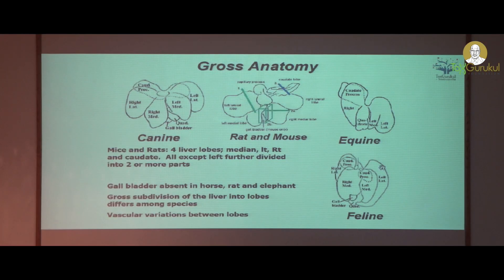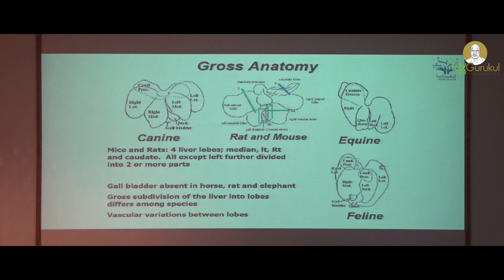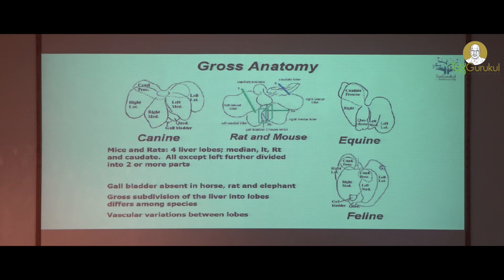Coming to the gross anatomy, this is the rat and mouse liver. We usually take the left lateral lobe and the right lobe. As you all know, the gallbladder is not present in rat, horse, and elephant, and there are gross subdivisions of the liver in different species as well as vascular variation between the lobes.